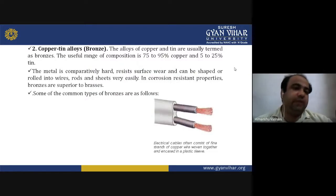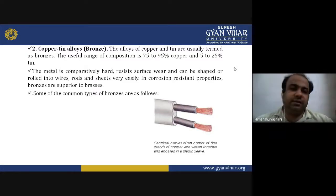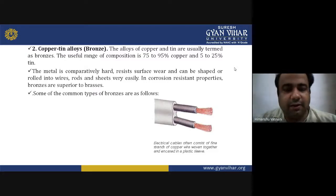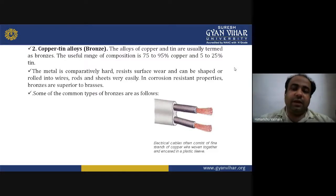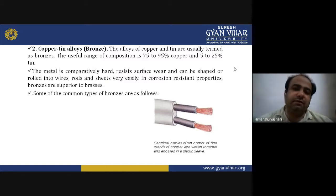The second copper alloy group is the copper-tin alloy, commonly called bronze. Alloys of copper and tin are usually termed bronze. The useful composition range is 75–95% copper and 5–25% tin. The metal has a hard, wear-resistant surface and can be shaped or rolled into wires, rods and sheets very easily. In corrosion-resistant properties, bronzes are superior to brass.